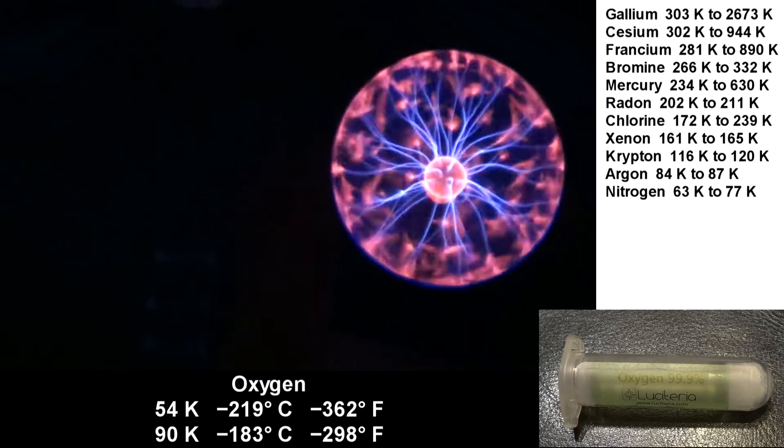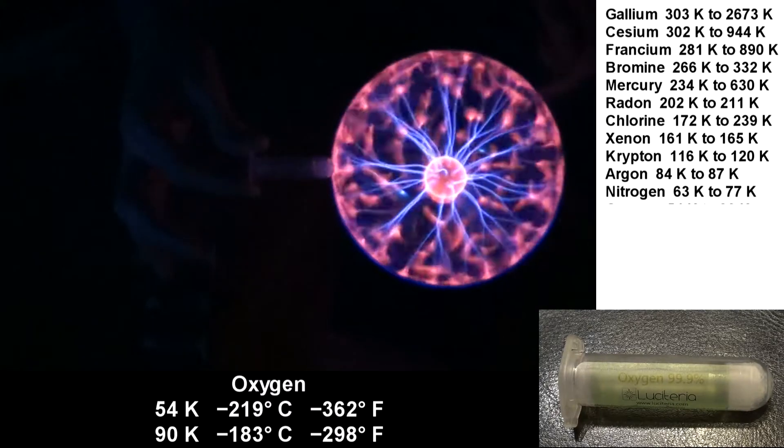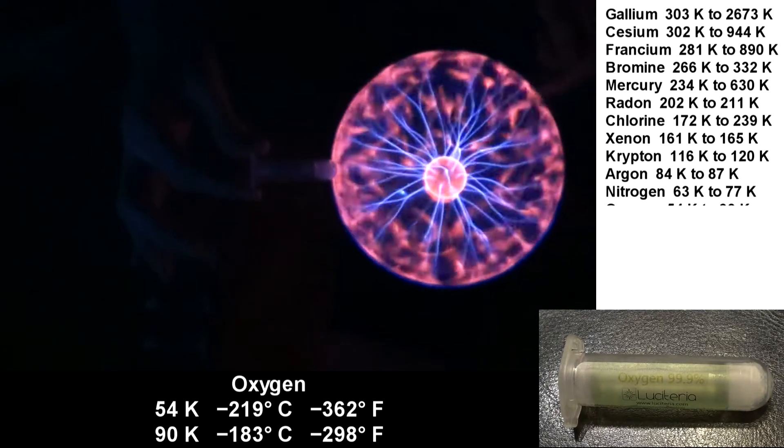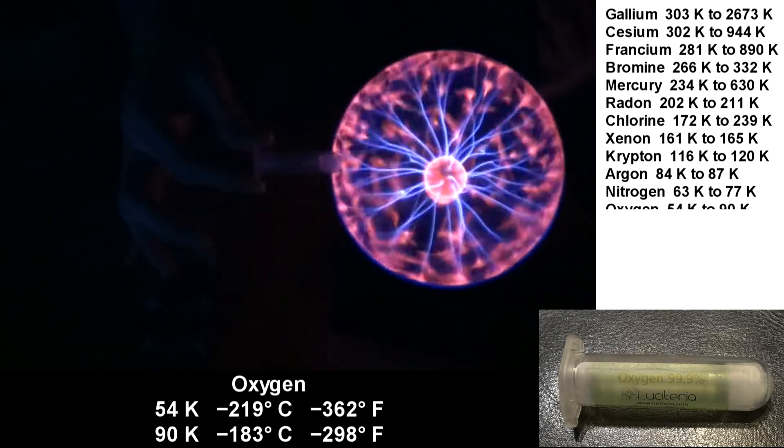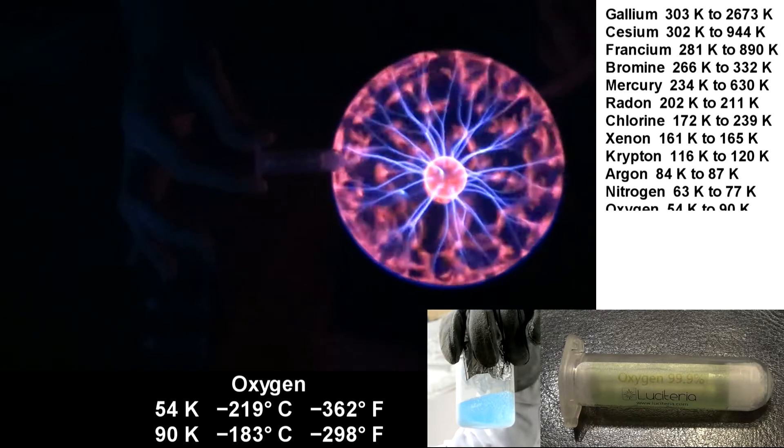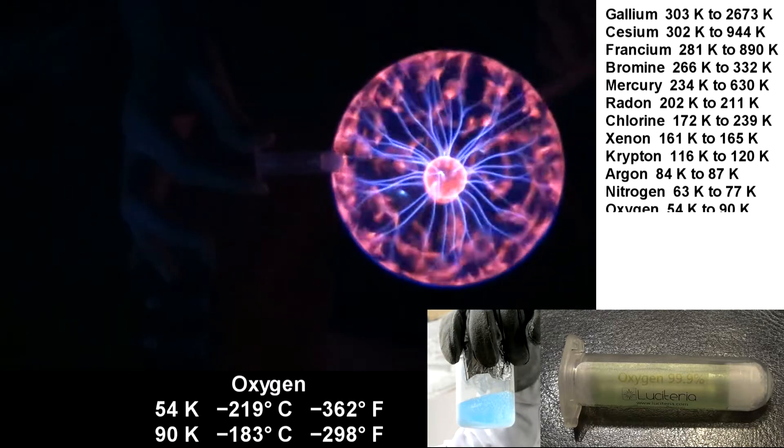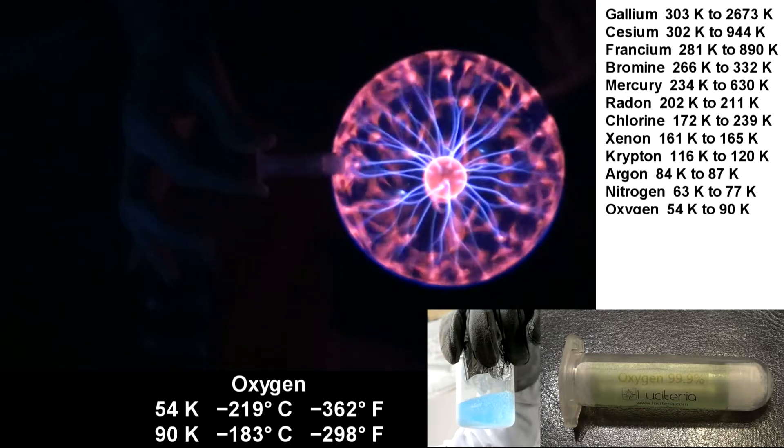Oxygen is next. I assume you know what oxygen is. This one is really dim. You may not be able to see that. The King of Random has an awesome video where they made liquid oxygen. I never would have guessed that it would be blue. It's a liquid from 54 Kelvin to 90 Kelvin.